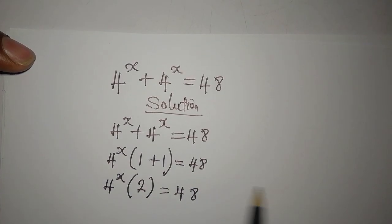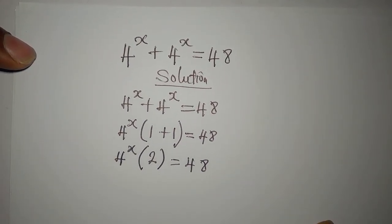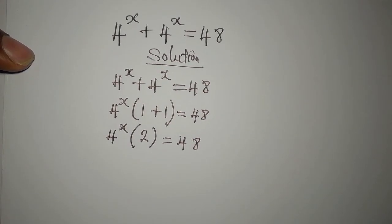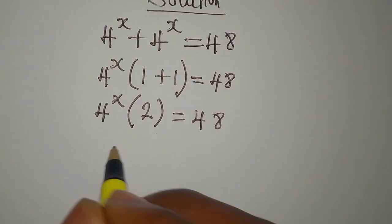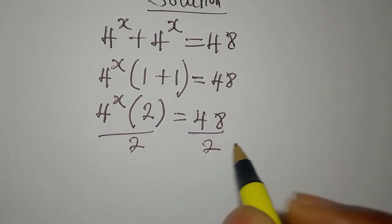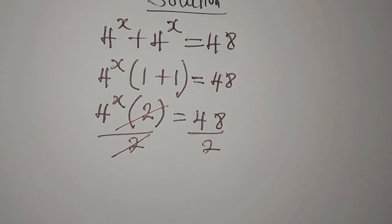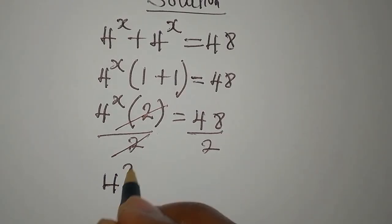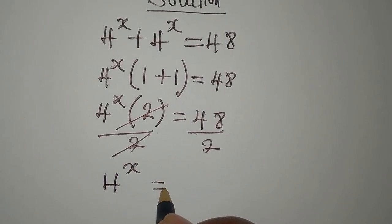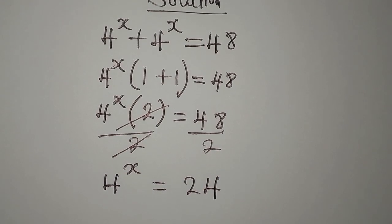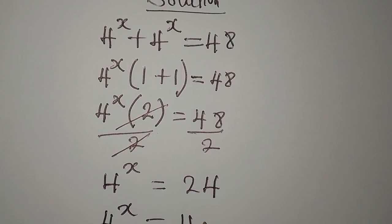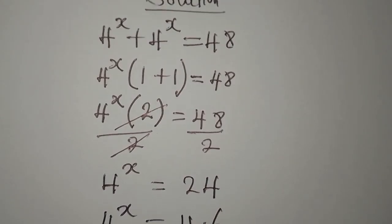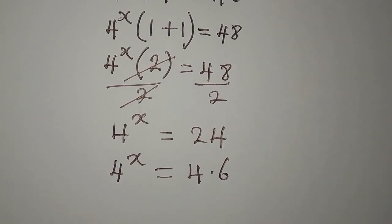This is equal to 48. The next step is to divide both sides by 2, so that the 2 cancels and then 4 to the power of x will be equal to 24. Now, 24 is 4 multiplied by 6.